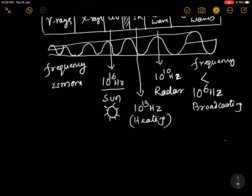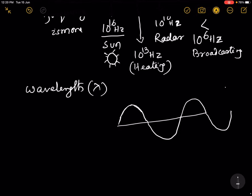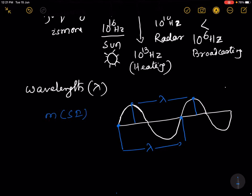Let me tell you about wavelength. A wave consists of a crest and a trough. The wavelength of a wave can be measured from one crest to the next, or from one trough to the next. Its unit is meter in the SI system, though we can also measure it in centimeters, angstroms, nanometers, etc.